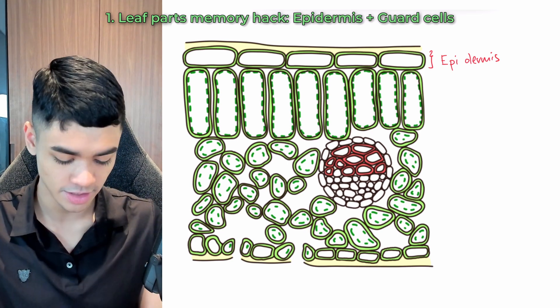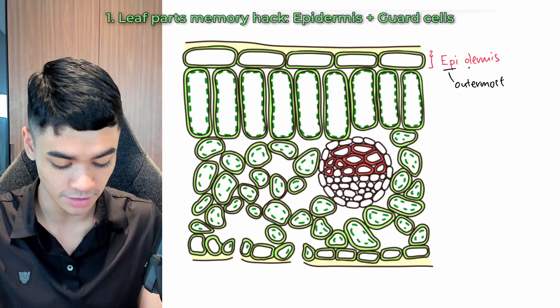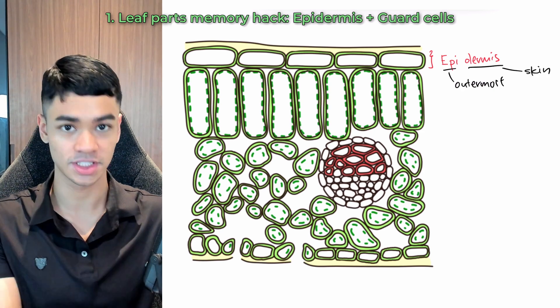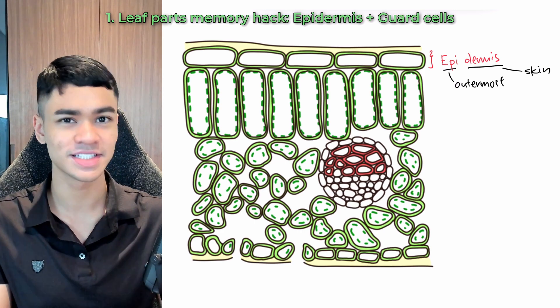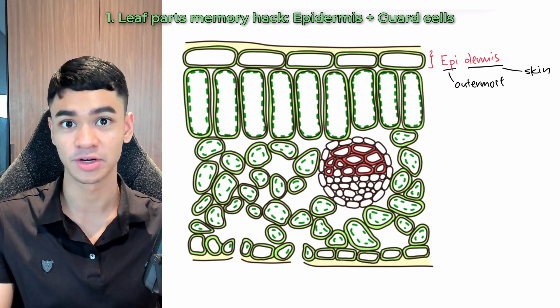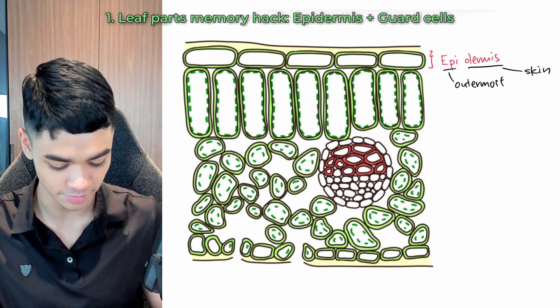So I'll break up the word into two parts. Epi means outermost and dermis means skin. Just like how when you go to a skin doctor, that's called a dermatologist. And so it makes sense, right? Because these types of cells are the outermost boundary. It's almost like a skin for the leaf.